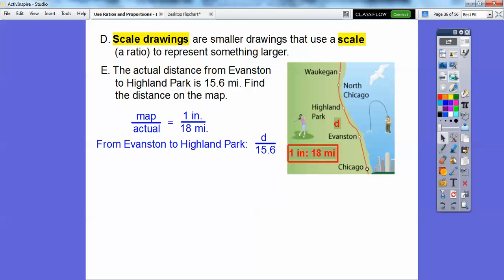So now we can set up the proportion right here and then cross multiply, okay? So we get 18 times D is 18D equals 1 times 15.6, which is just 15.6.